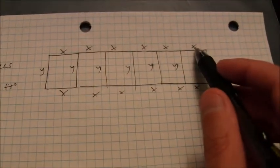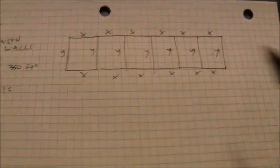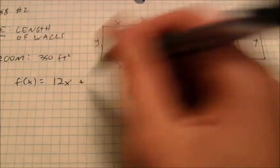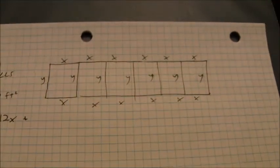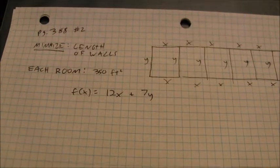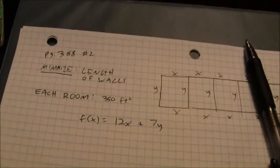Notice there's six rooms. I have one, two, three, four, five, six x's, but each of those x's is doubled. So that's 12x plus, and then my y's, I have one, two, three, four, five, six, seven y's. That's the function I'm going to try to minimize.